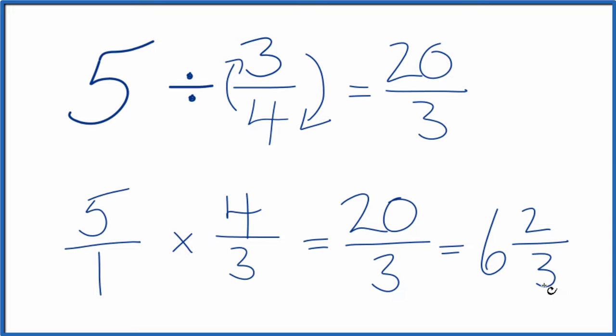6 times 3 is 18, plus 2, that gives us the 20. So 20 thirds. This is Dr. B dividing 5 by 3 fourths. The answer? 20 over 3, or 6 and 2 thirds. Thanks for watching.